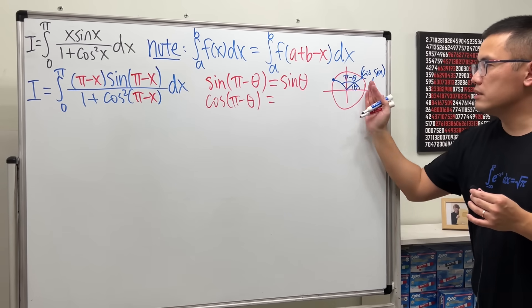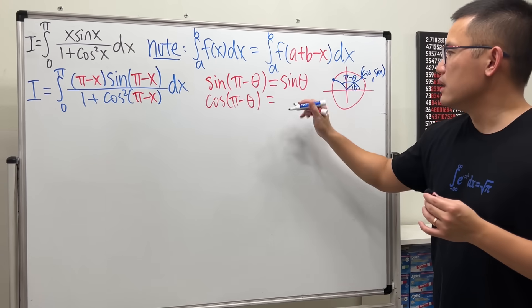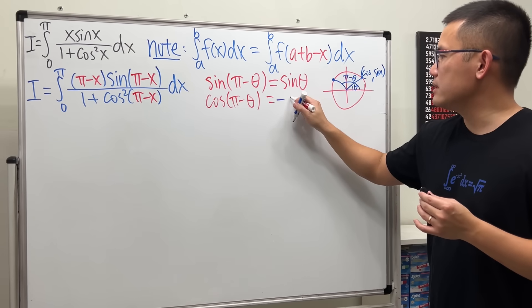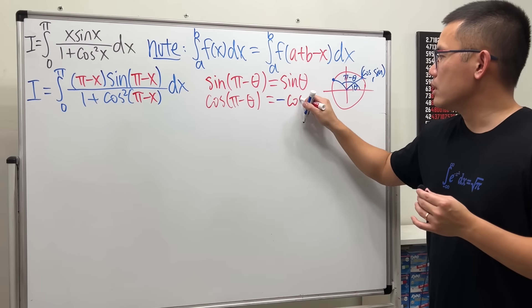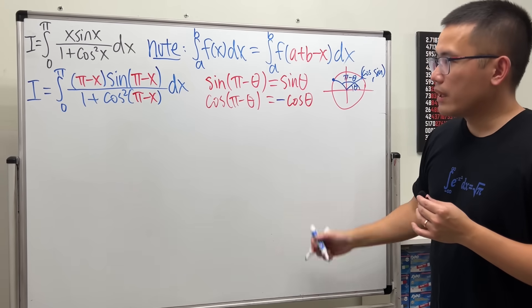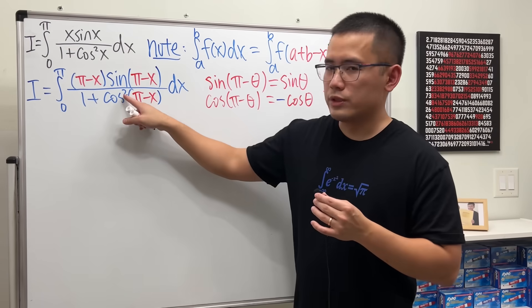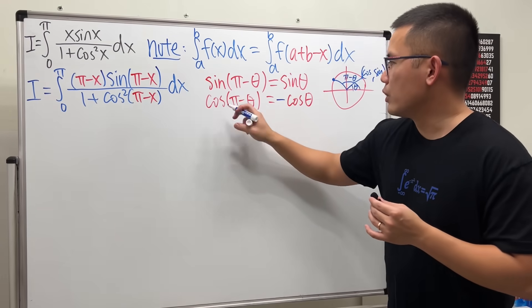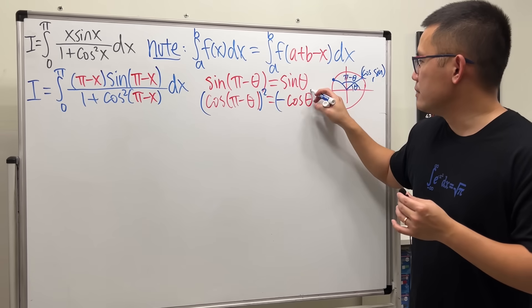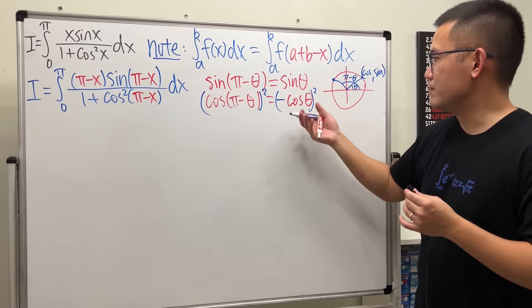Since it's on the opposite side, cos(π − θ) = −cos(θ). However, in our integral we have cosine squared, so squaring the negative gives us cos²(π − x) = cos²(x), which is nicely still cos²x.